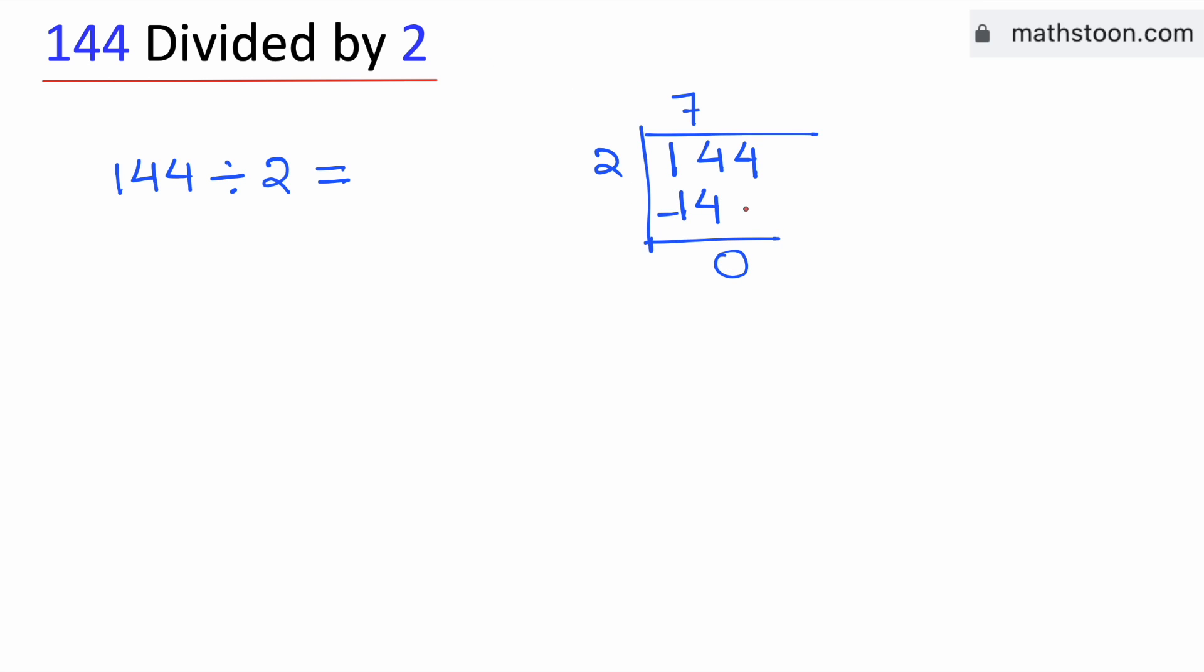As 0 is less than 2, we will bring down this number 4 here. Now see that this is the number 4, so we can remove this 0.